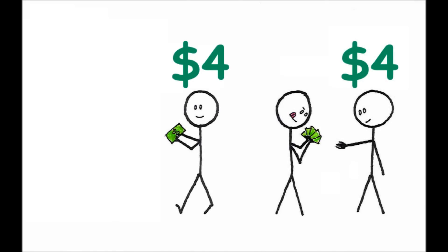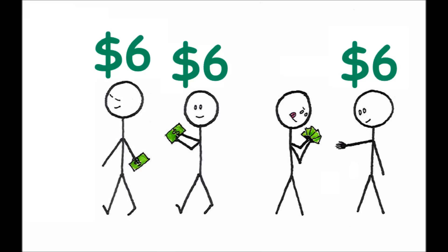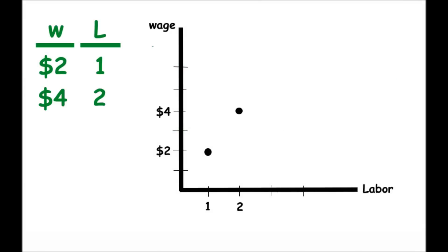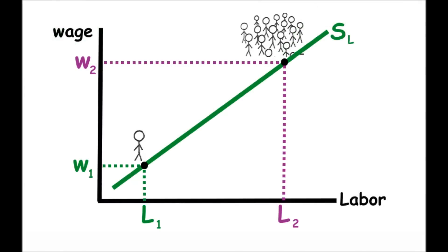When you offer $4 an hour, two people are willing to work for you. At a salary of $6 an hour, three people are willing to work for you, and so on. The upward sloping supply shows that at higher wages, more labor will be supplied.